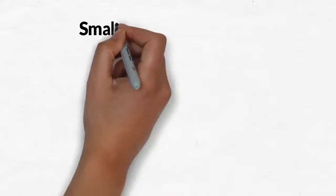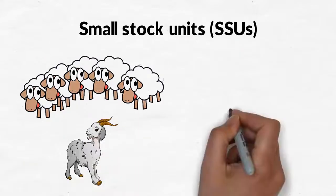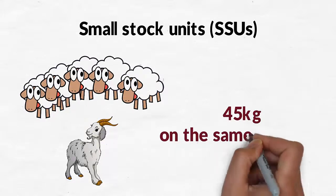With small stock units, the equivalent would be about 10 sheep or goats each weighing 45 kg on the same land area.